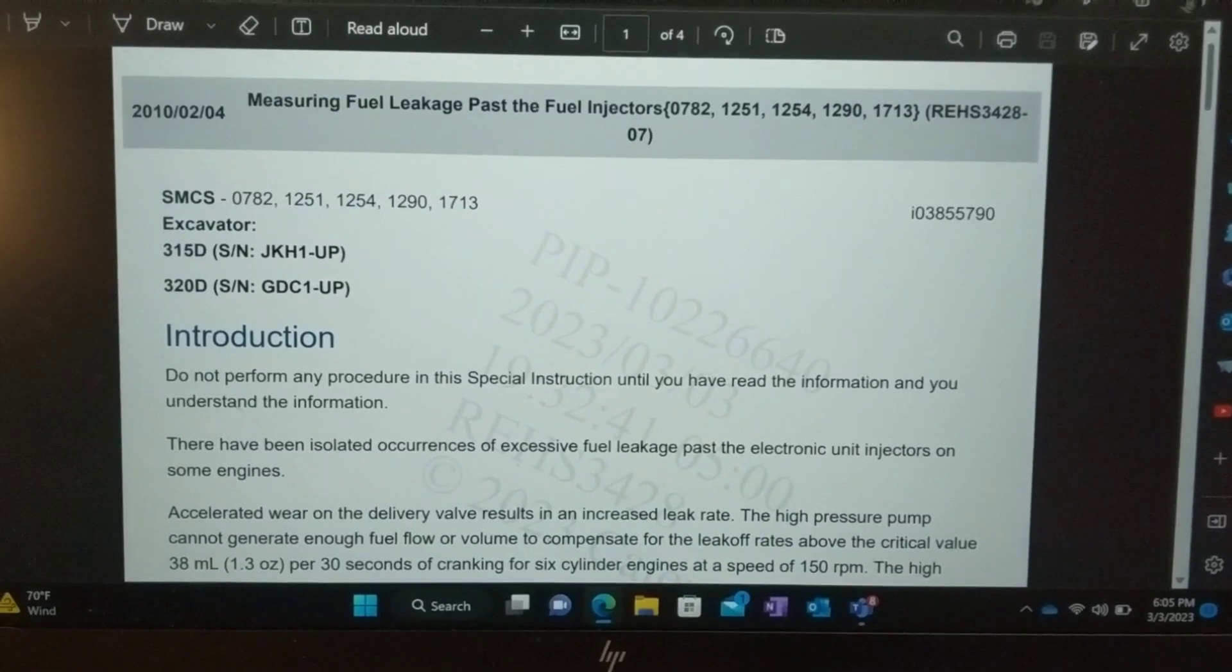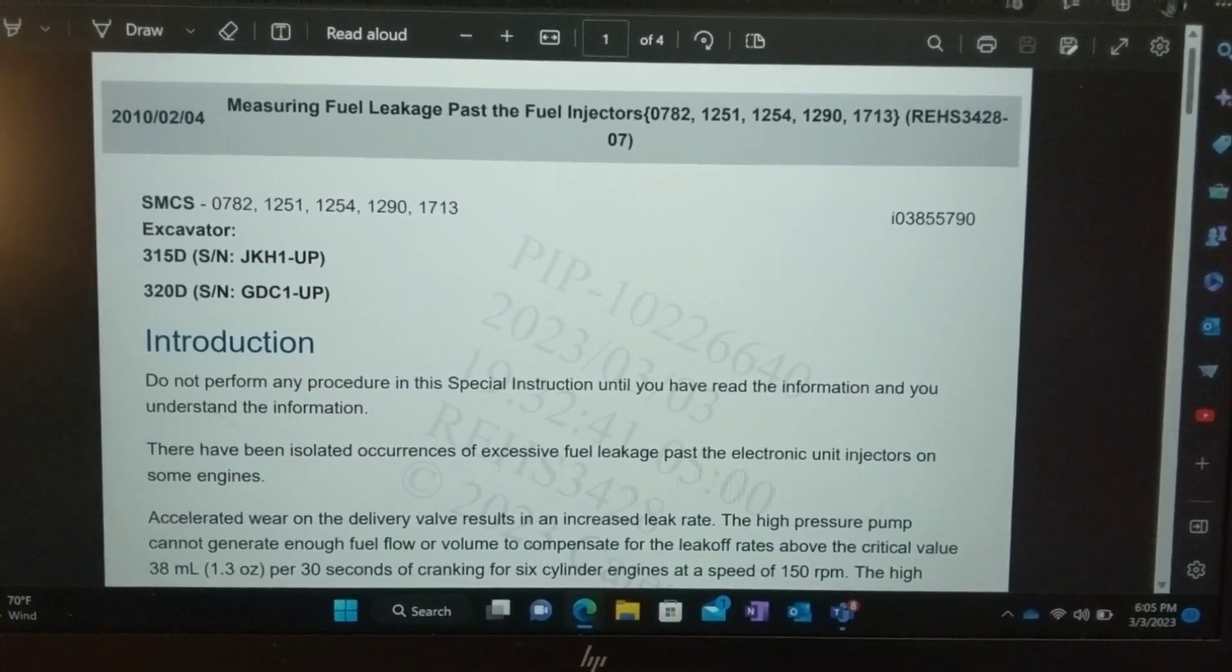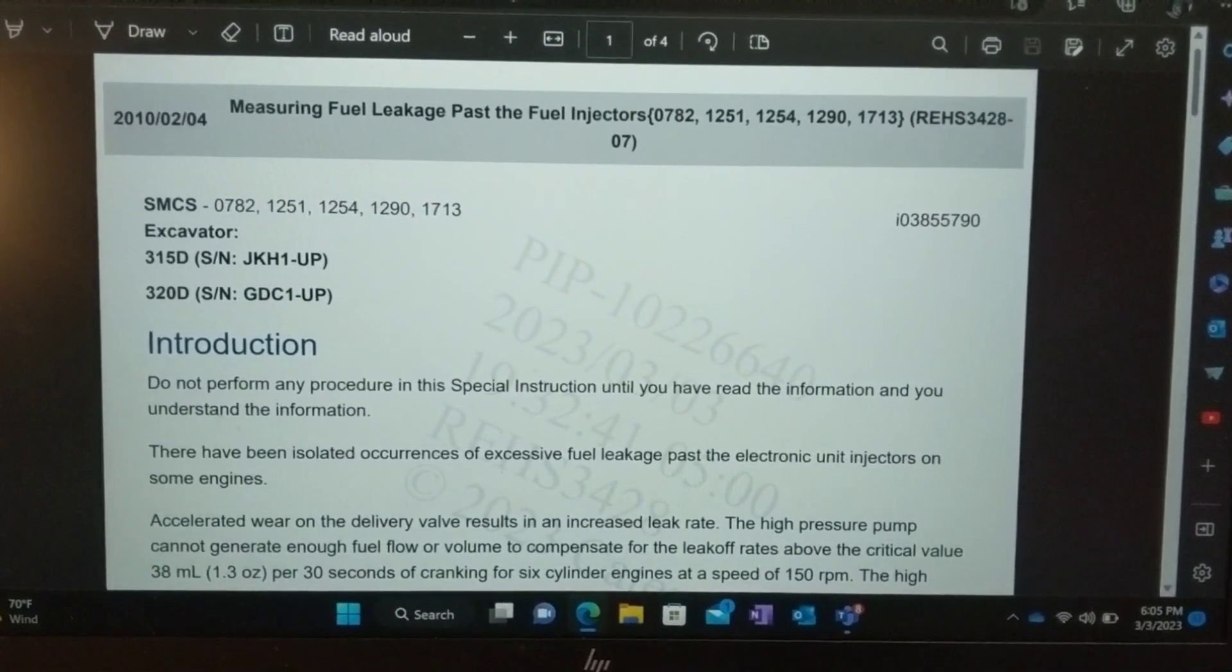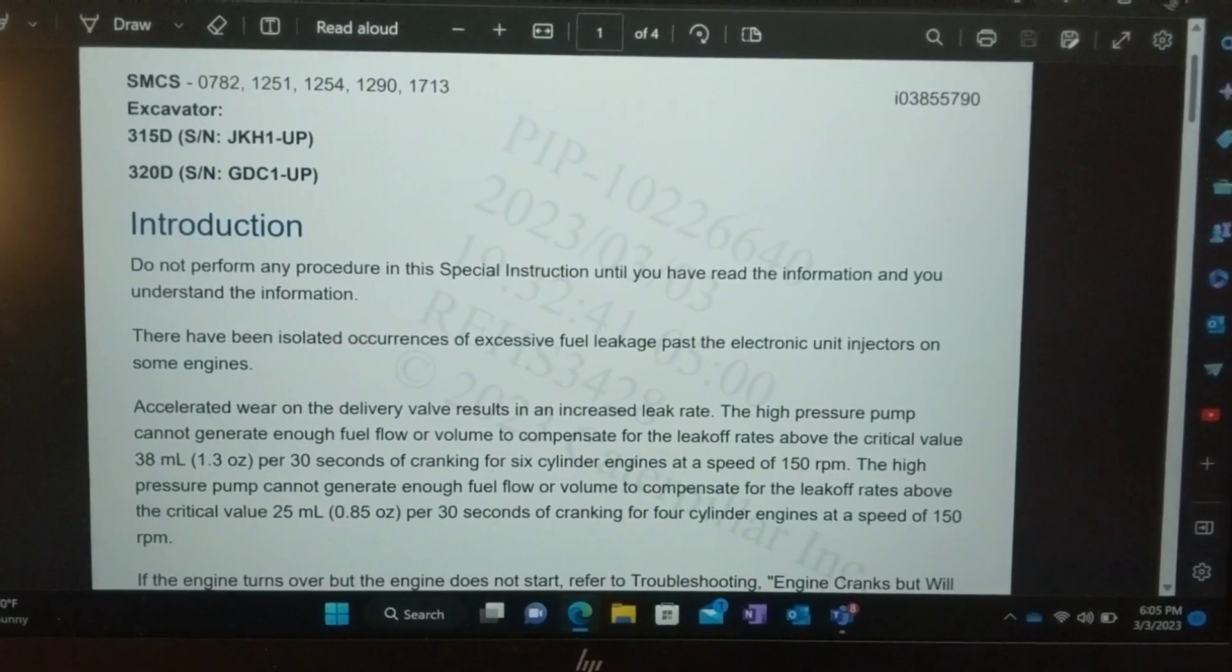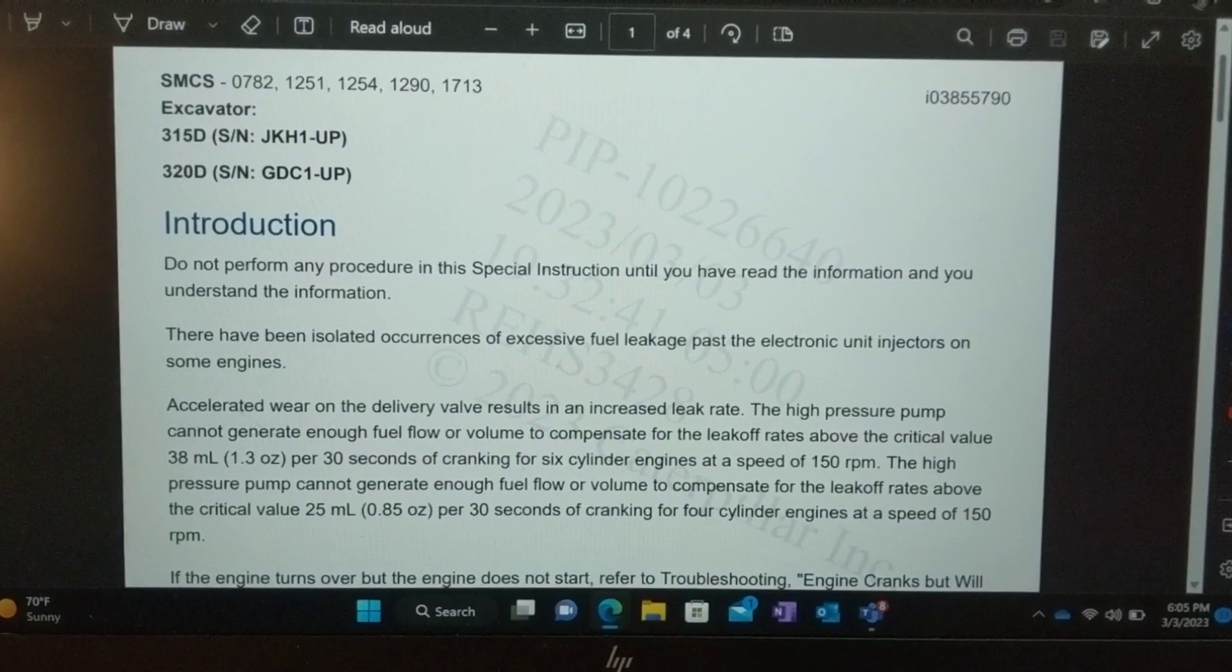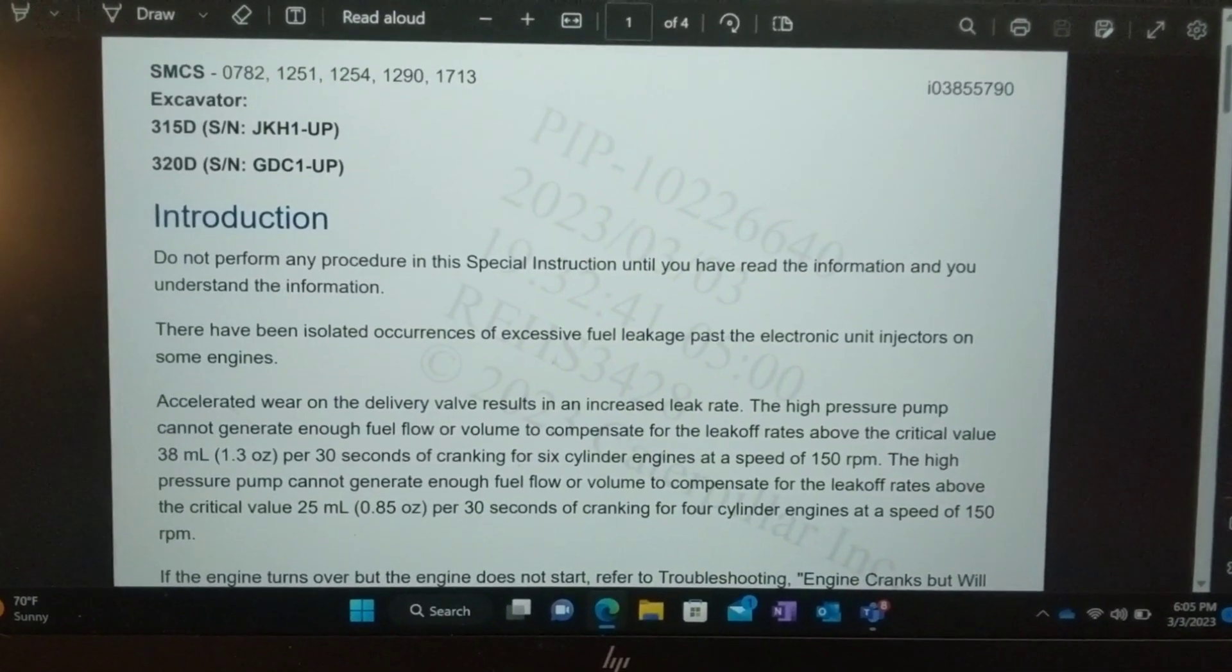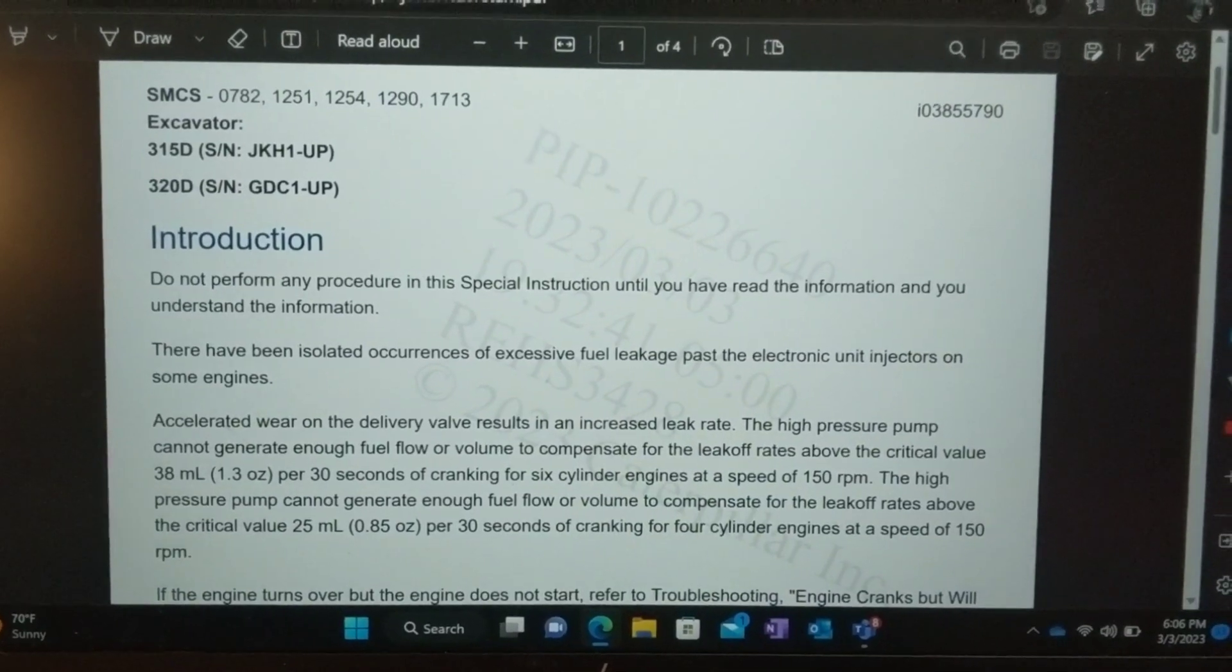What you're looking at in front of you here is Caterpillar's procedure on how to perform an injector fuel return test. Most manufacturers are going to pretty much be in the same procedures: disabling injectors, take your return flow off of one head or both heads, and run it into a container.